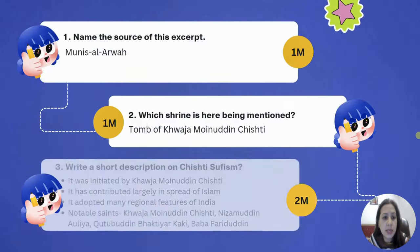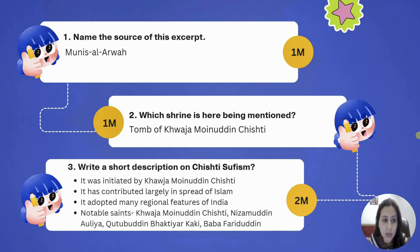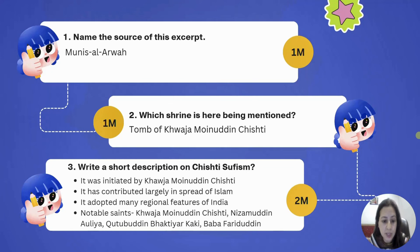The first question: name the source of this excerpt — it is Al-Arwah. Which shrine is being mentioned? The tomb shrine of Khawaja Maunuddin Chishti. Write a short description on Chishti Sufism. The Chishti silsila was started by Khawaja Maunuddin Chishti. It contributed largely to the spread of Islam and is the most popular Sufi order in India. It adopted many regional features of India, which is the reason for its fame.